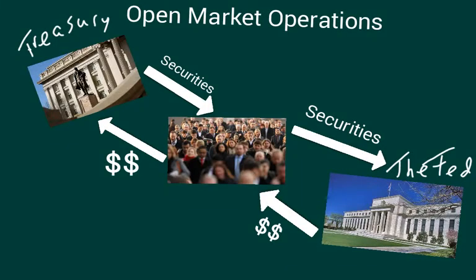We're going to talk about the Federal Reserve right now. One of the most important tools that the Federal Reserve uses is called open market operations. Open market operations is essentially the buying and selling of securities by the Fed in order to change the money supply — most of the time, increase the money supply.